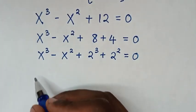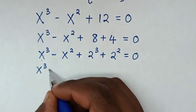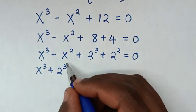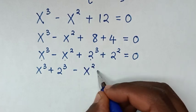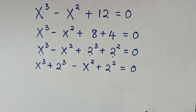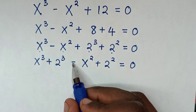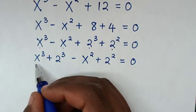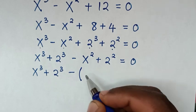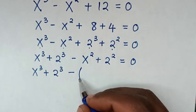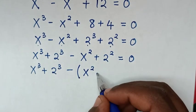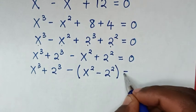Then in the next step, we group the terms: x cubed plus 2 cubed, then we take negative outside of the bracket, so negative x squared plus 2 squared becomes negative bracket x squared minus 2 squared bracket, equal to 0.